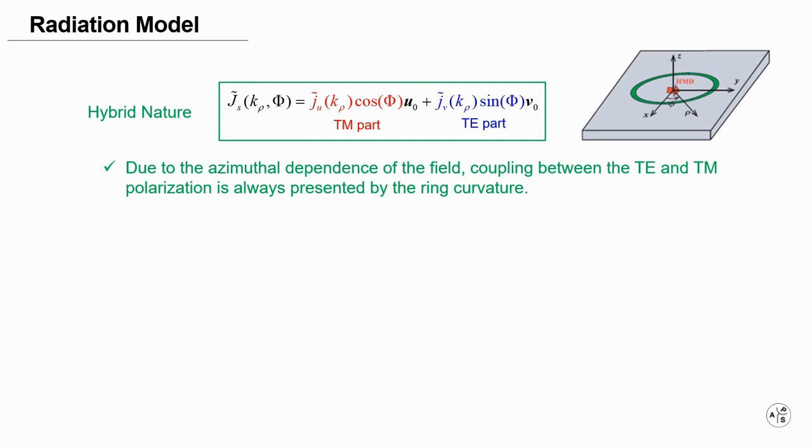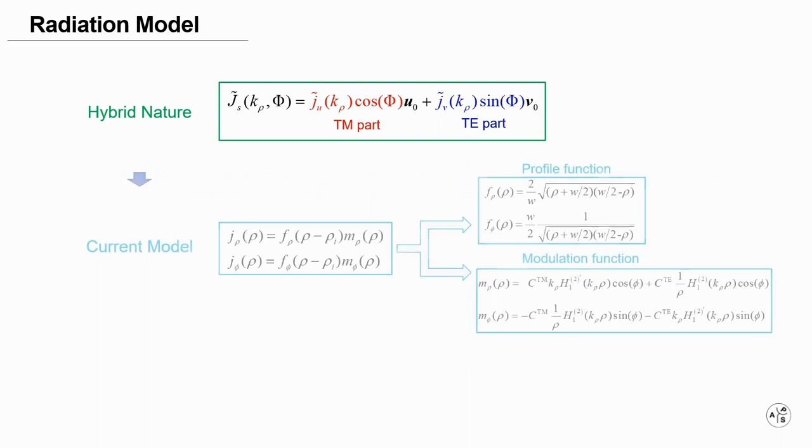By theoretical deduction, we found that due to the azimuthal dependence of the field, coupling between the TE and TM polarization is always presented by the ring curvature. Based on this, an approximate current model is derived.